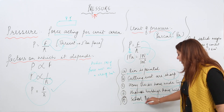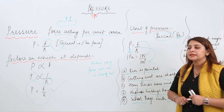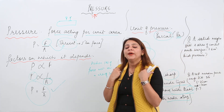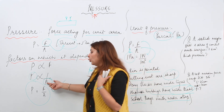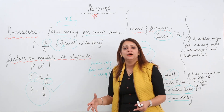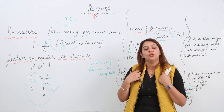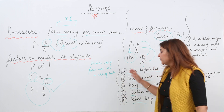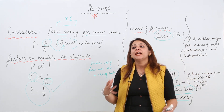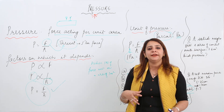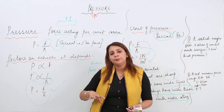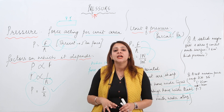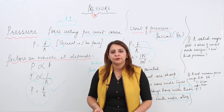School bags with wide straps are easier for children to carry compared to narrow straps. When straps are wide, more area is in contact with the shoulders. More area means less pressure, so the child can carry a bag full of books more comfortably. The area is specially designed depending on whether more or less pressure is needed for a given purpose.